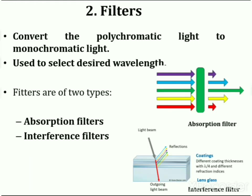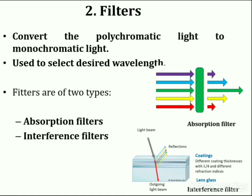The second part used in instrumentation includes filters. Filters are used to convert polychromatic light to monochromatic light and to select the desired wavelength of radiation. Generally two types of filters are used: absorption filters and interference filters. Absorption filters are essentially glass filters that are dyed or pigmented gelatin resins, mostly used to filter unwanted wavelengths. They are commonly utilized to block a certain band of wavelengths and are also useful for transmitting long wavelengths and blocking shorter ones.